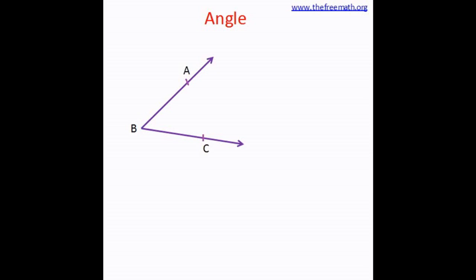As you see here, the point from which both the rays start is B, and it is called the vertex. The two rays here are BA and BC, and these are called the arms of the angle.